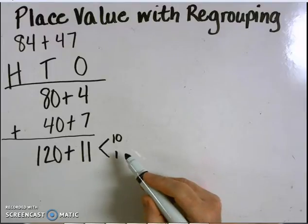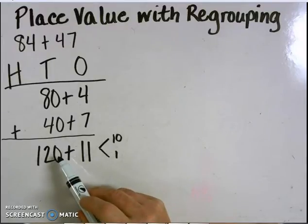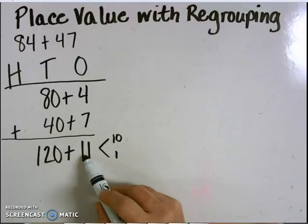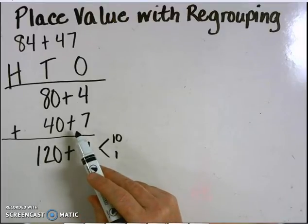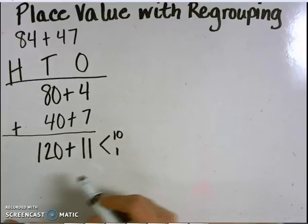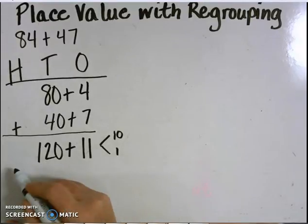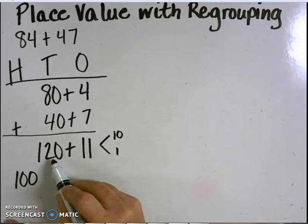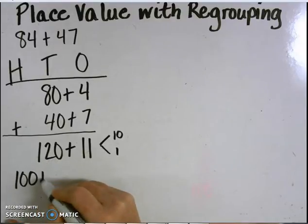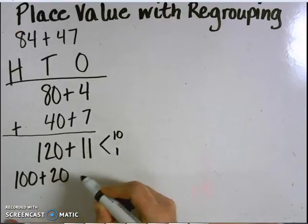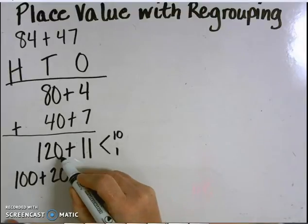If that's not a strategy you're comfortable with, you could move on to breaking apart 120 plus 11 by place value again. The number 120 has 100, two 10s, or 20, and zero ones.